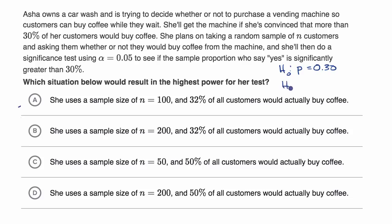And that her alternative hypothesis is that the true population proportion is greater than 30%. And so if we're talking about what would result in the highest power for her test.